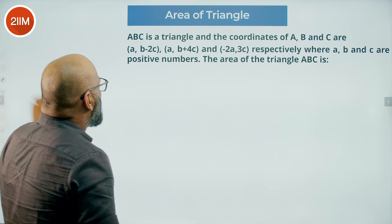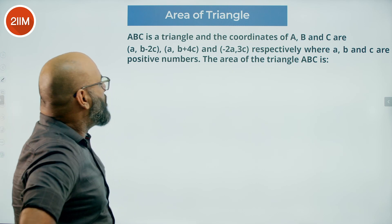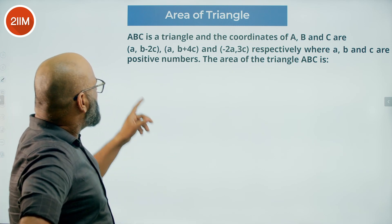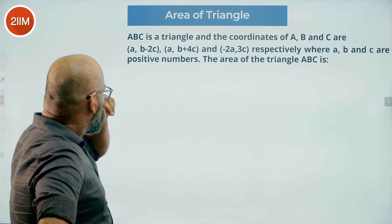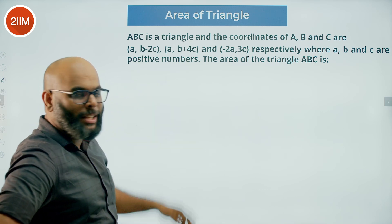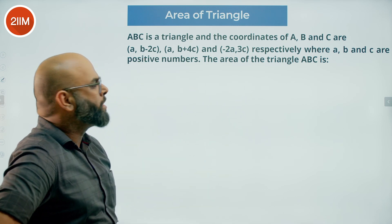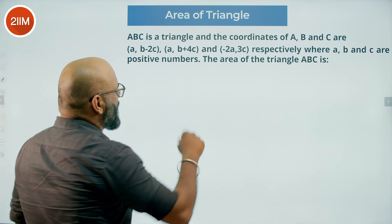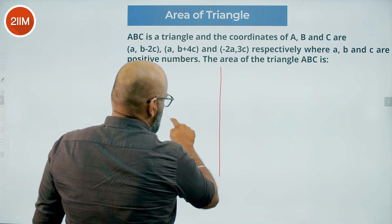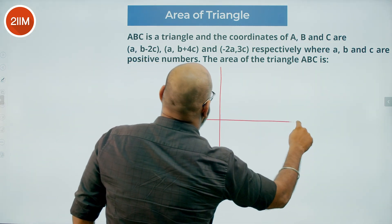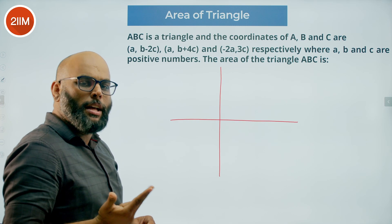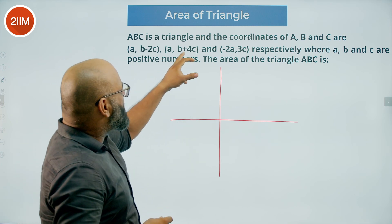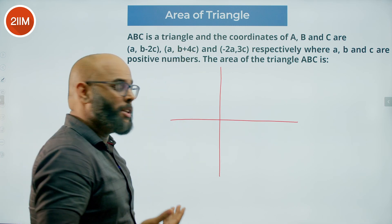So we have been given a triangle with three coordinates — A, B and C points — and all three vertex points are expressed with respect to A, B and C, where A, B and C are positive numbers. We have to find the area of this triangle. So let's try plotting them first. Since A, B and C are all positive numbers, A comma B plus 4C definitely falls in the first quadrant.